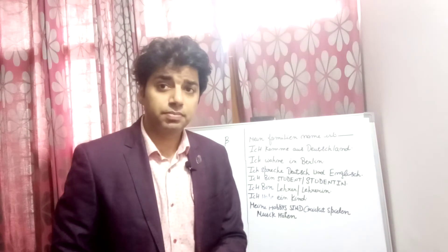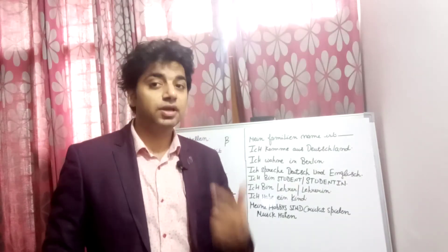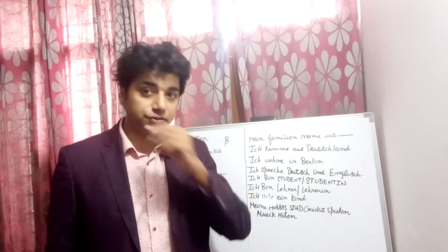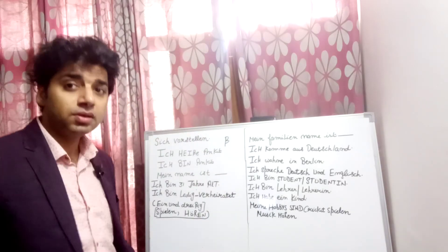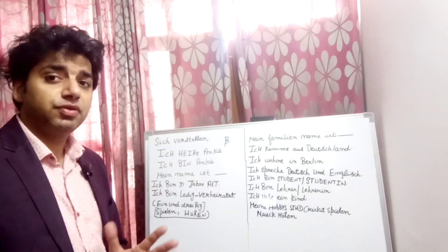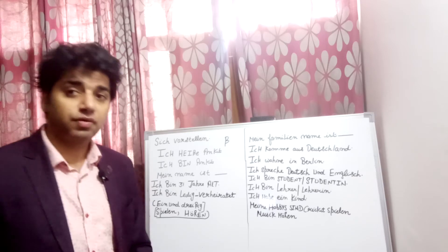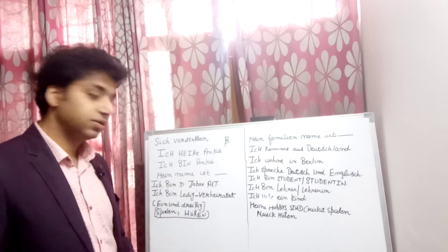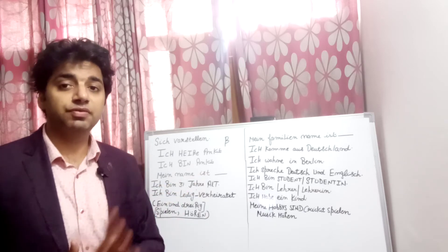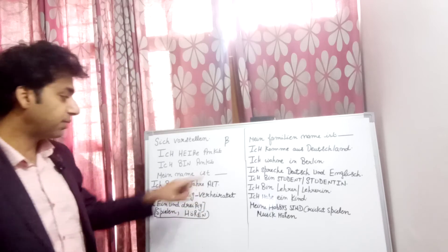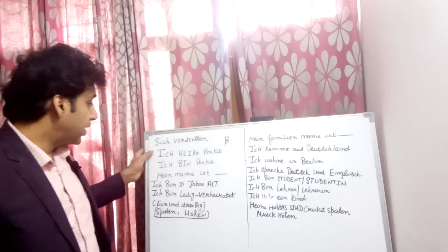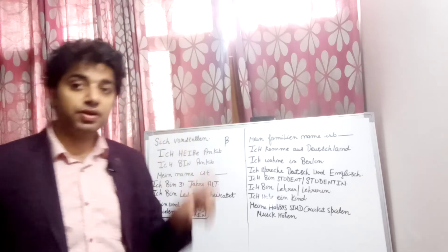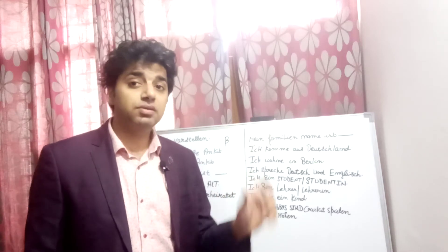If you're speaking with friends, you say 'Ich bin Ankit' — that means 'I am Ankit.' For a formal version, like speaking with your interviewer or office director, you say 'Mein Name ist Ankit.' 'Ist' means 'is,' so 'Mein Name ist' means 'my name is.' So there are three ways: 'Ich heiße,' 'Ich bin,' and 'Mein Name ist.'